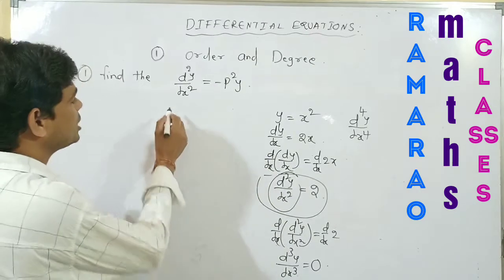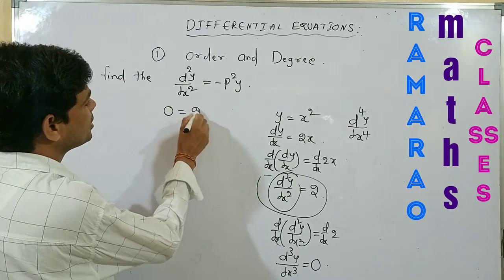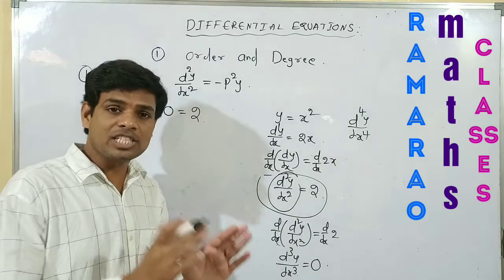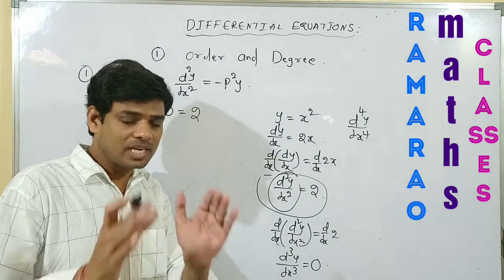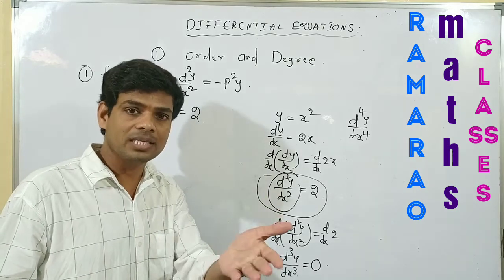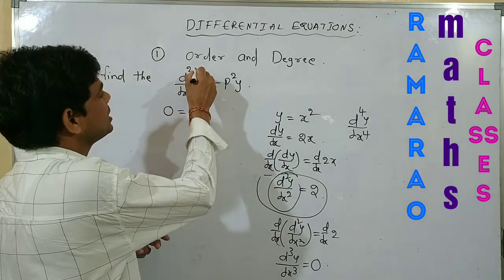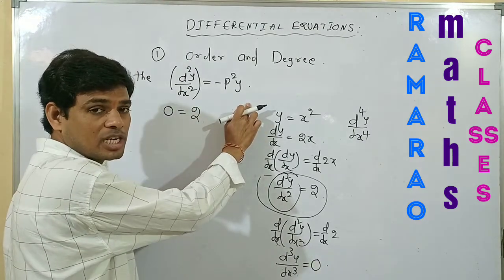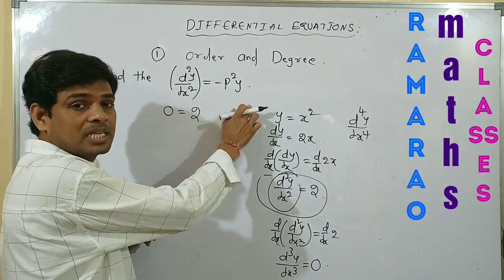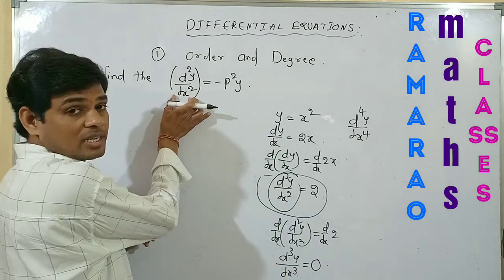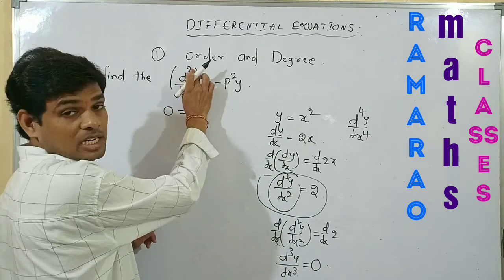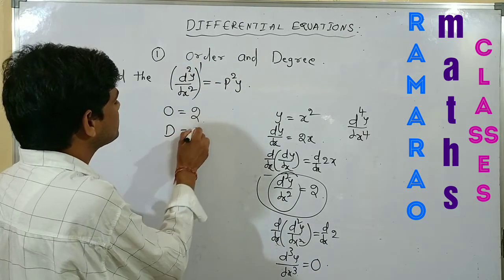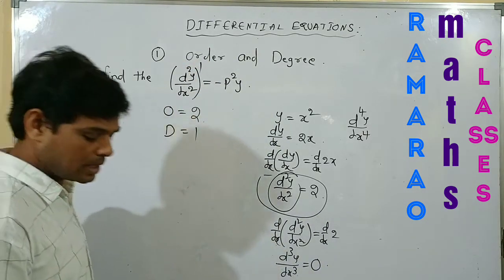Here the order is 2. The degree is defined as the power of the highest order derivative in the polynomial differential equation. This equation is a polynomial equation; the highest order is 2, and its power is 1. Therefore degree = 1.